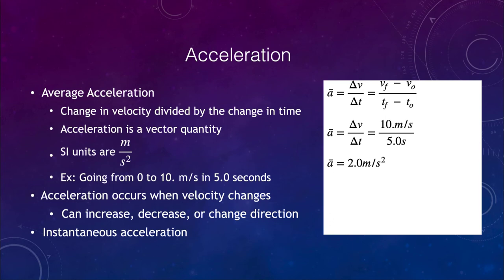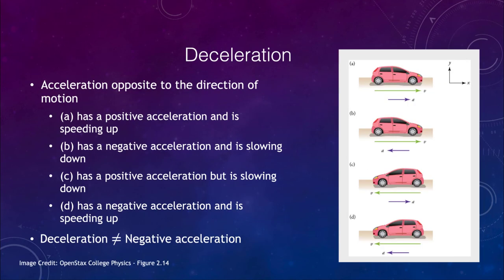Let's look a little more at deceleration. A deceleration is an acceleration that is opposite to the direction of motion — these are the cases where things are slowing down. Decelerations would be cases B and C, because the acceleration is in the opposite direction of the motion or the velocity.